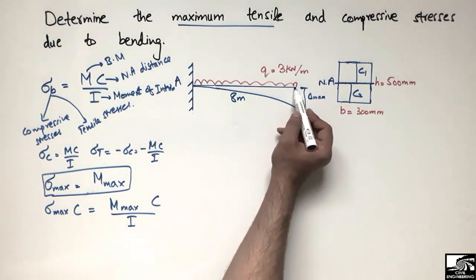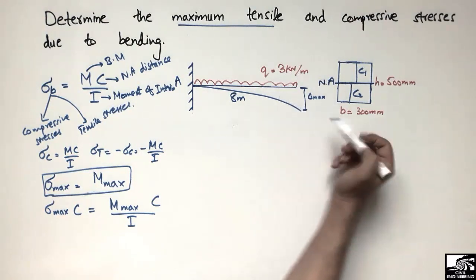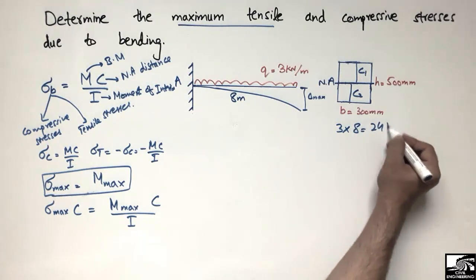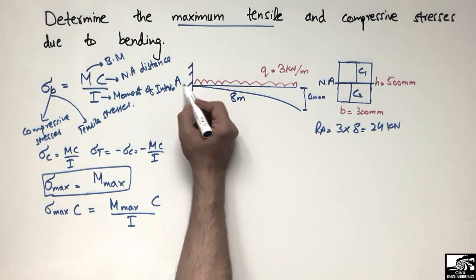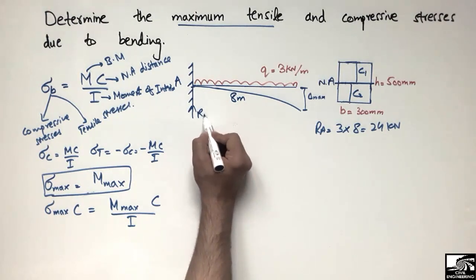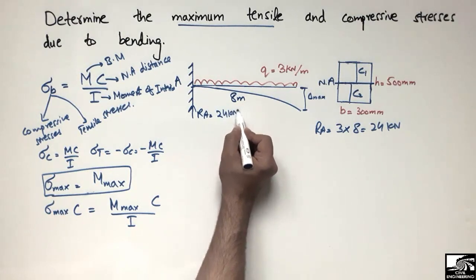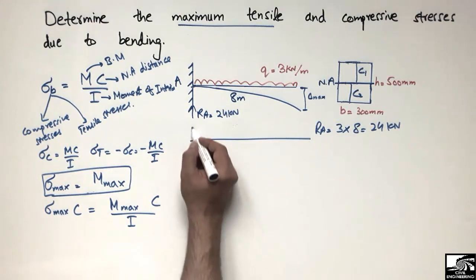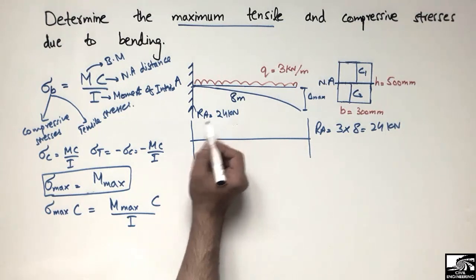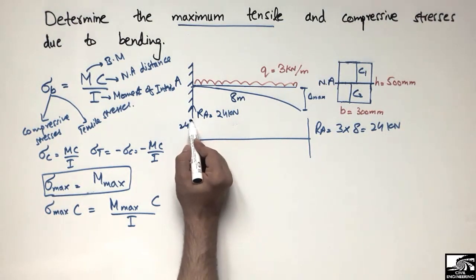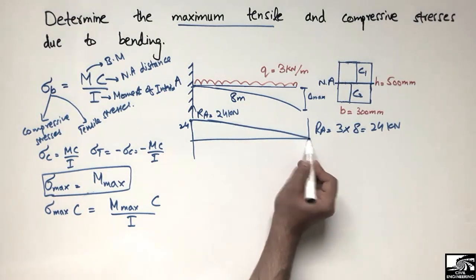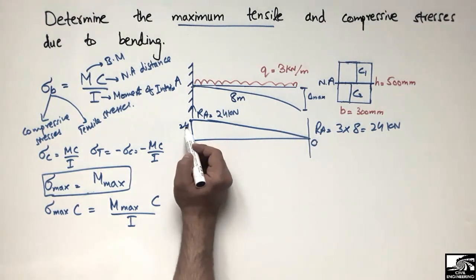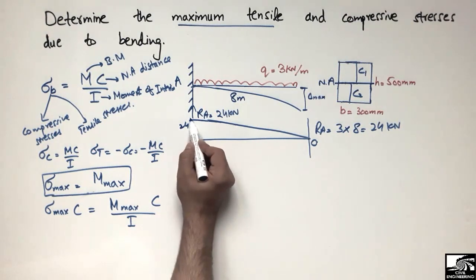To draw the shear force diagram, the uniformly distributed load is 3 kN/m distributed over 8 meters, so 3 × 8 = 24 kN. The support reaction at A is 24 kN, as this fixed support resists all the load. The shear force is 24 kN at the support and 0 kN at the free end, giving a triangular shear force diagram.